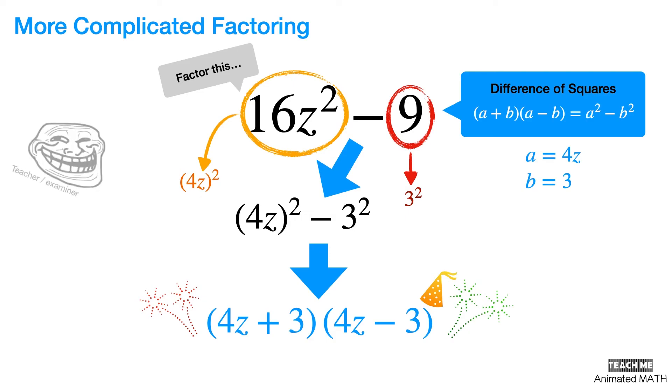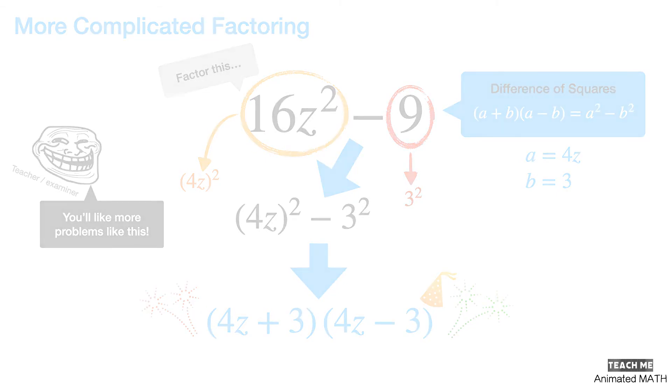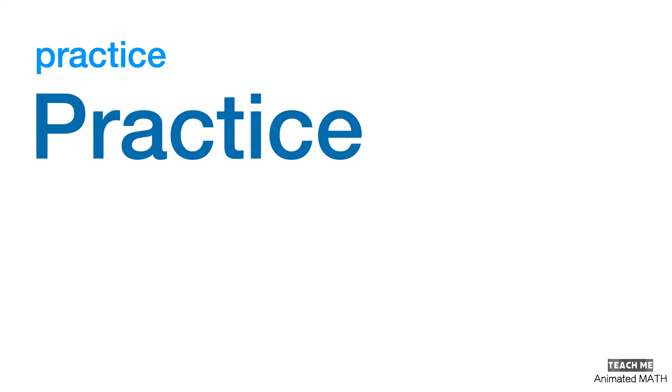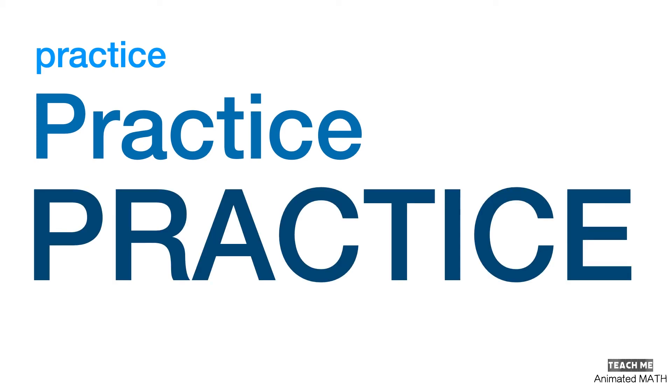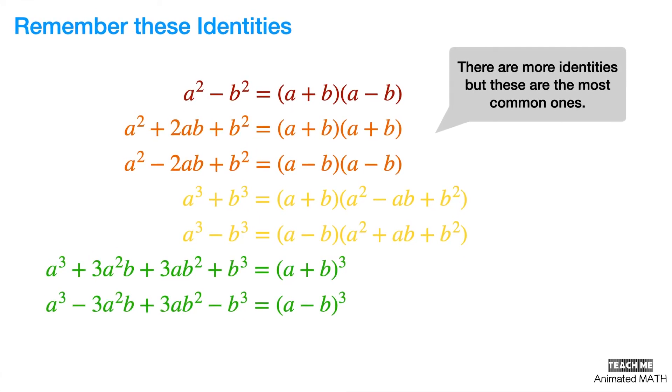But the thing is, your teachers or examiners are most likely to give you more and more complicated factoring. So, how do you learn to factor polynomials like this? By getting lots of practice, practice, practice! And having awareness of the polynomial special case products or identities. Here is a list of common identities that you should familiarize yourself with. Remember them and you will have a much easier time factoring polynomials.